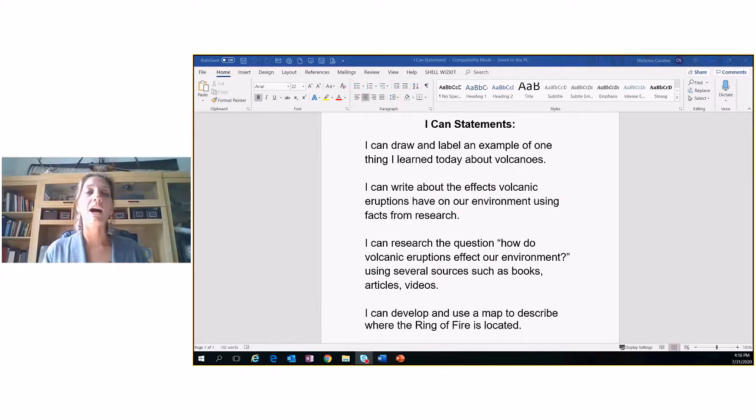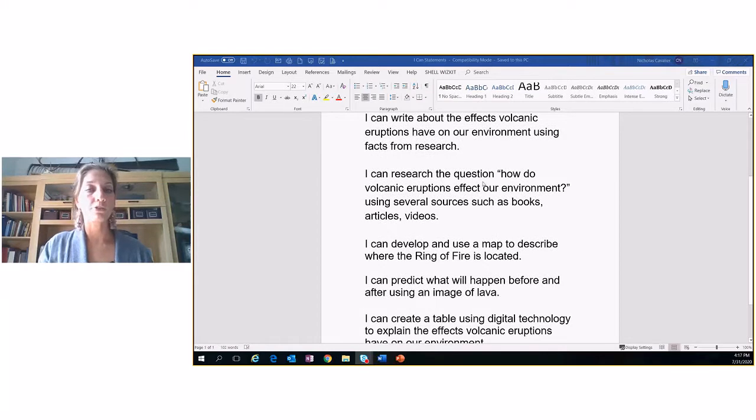We're going to go over our I can statements. You should be familiar with these, but it just kind of describes what we'll be doing, what will be expected of you as a student, and what you will be exposed to today. I can draw and label an example of one thing I learned today about volcanoes, and we're going to do that in our journals. I can write about the effects volcanic eruptions have on our environment using facts from research, so also in our journal. I can research the question, how do volcanic eruptions affect our environment using several sources such as books, articles, videos.